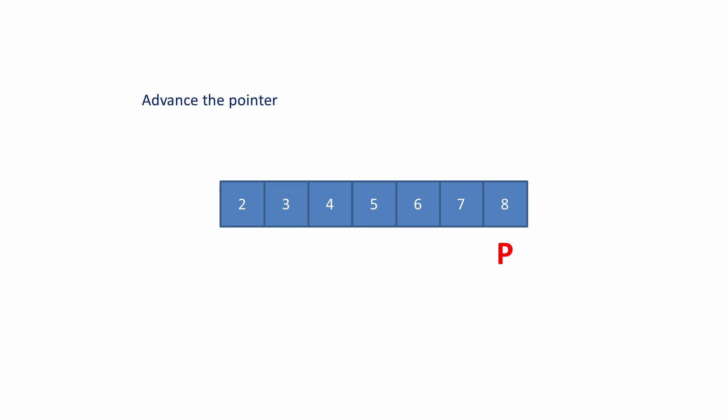There's nowhere left for the pointer to go, so the insertion sort is finished. To get familiar with this algorithm, why not take a handful of playing cards, or just some pieces of paper with numbers written on them, and lay them out in front of you in a random order. Then follow the steps you've just seen to sort them. Do this a few times until you're sure of the process.